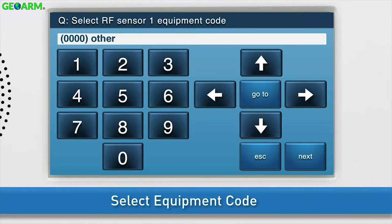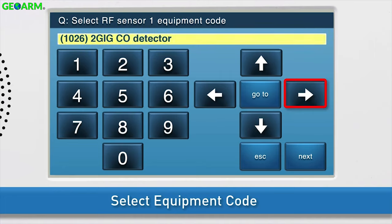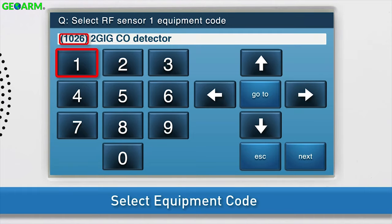Select the equipment code. Press the right arrow until 2Gigs CO detector displays in the answer box. You can also type 1, 0, 2, and 6 to select this option. Press the down arrow to go to the next sub-question.